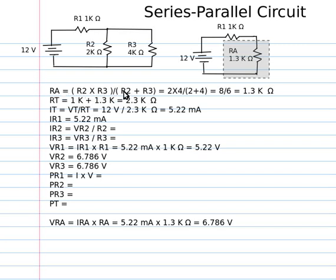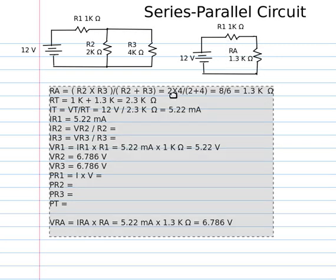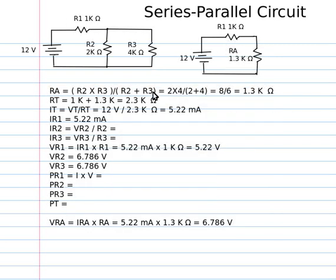The product over sum formula is R2 times R3 divided by R2 plus R3. In other words, it's the product of the two divided by the sum. Now, we got to be careful to do the operations in the correct order here. I'm going to multiply 2 by 4, that gives me 8, and then I'm going to add the 2 plus 4, that gives me 6. This is in kilo ohms, all these values are in kilo ohms. So my answer is going to be in kilo ohms.